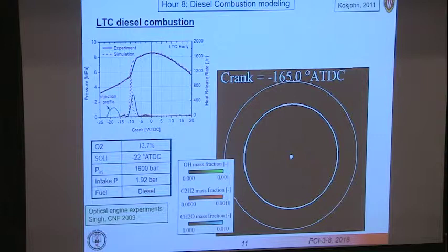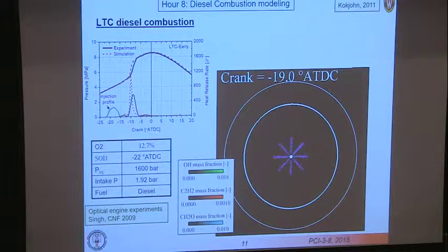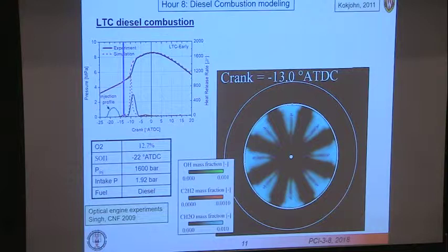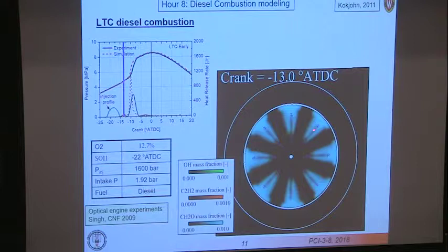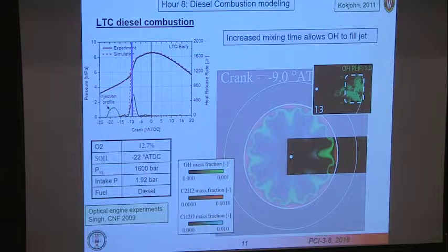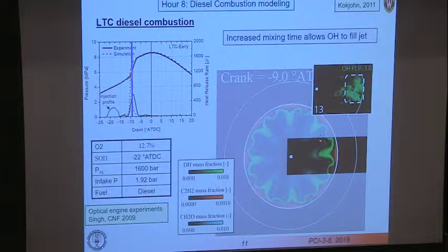Let's look now at the low temperature combustion case. The injection was during compression, 22 degrees before TDC, and then there's a delay followed by a single spike more or less of heat release. We see the liquid injection, and stopping after injection is complete, we see significant formaldehyde appearing inside the jets. The blue shows the liquid is almost vaporized away. At the peak of the heat release, we see a significant amount of OH inside the jet and very little first-stage combustion products — the formaldehyde — and we see soot precursors being formed along the bowl wall.